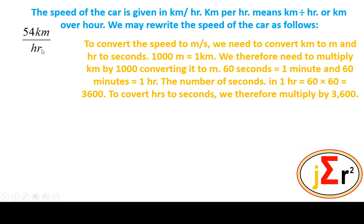60 seconds equals 1 minute, and 60 minutes equals 1 hour. The number of seconds in an hour is therefore 60 multiplied by 60, which is equal to 3,600.